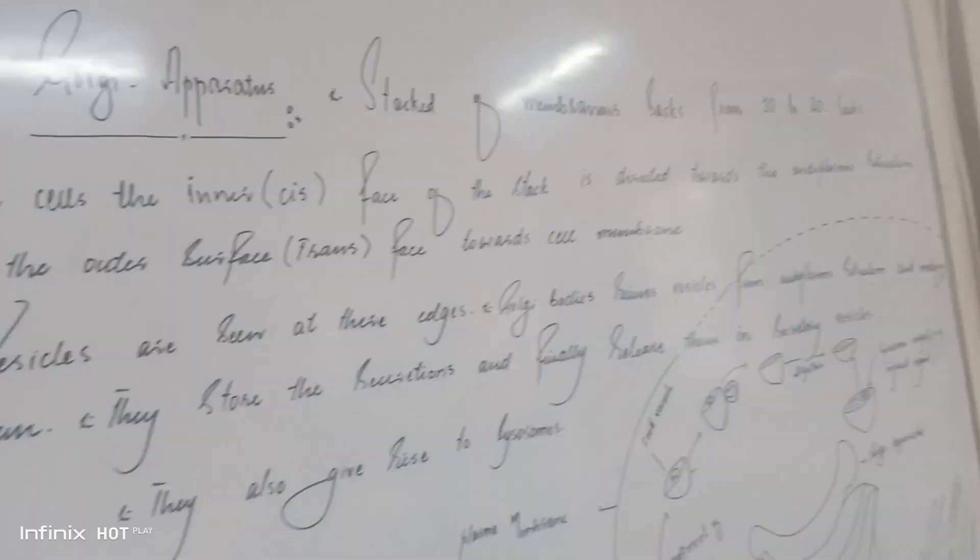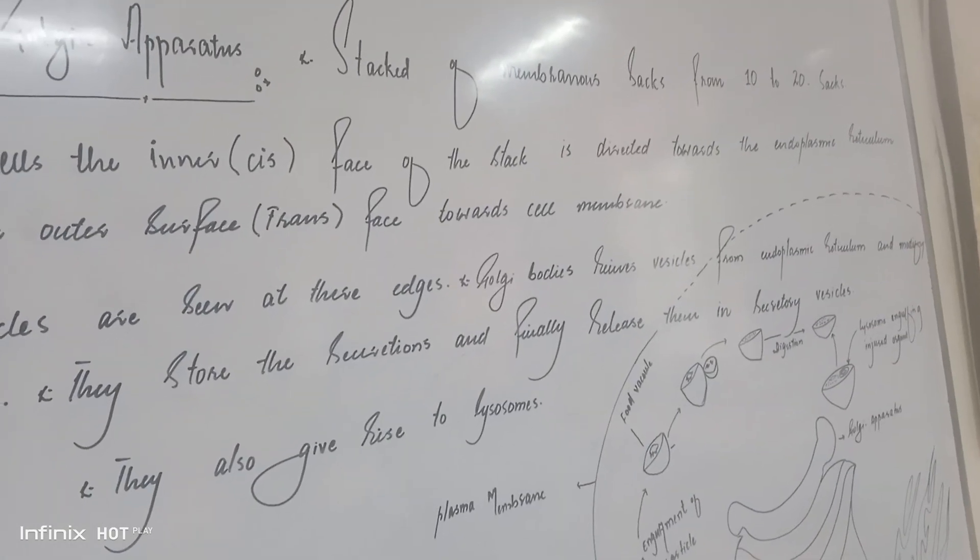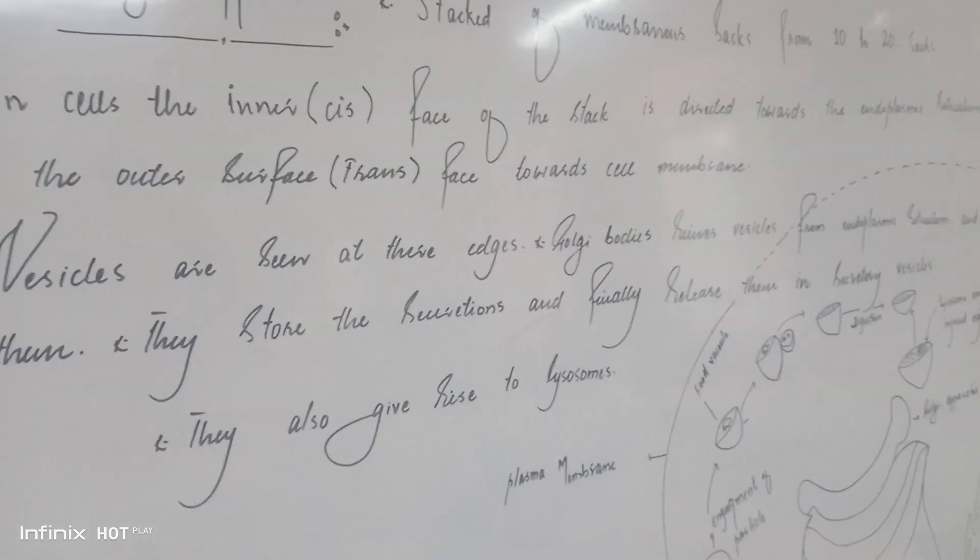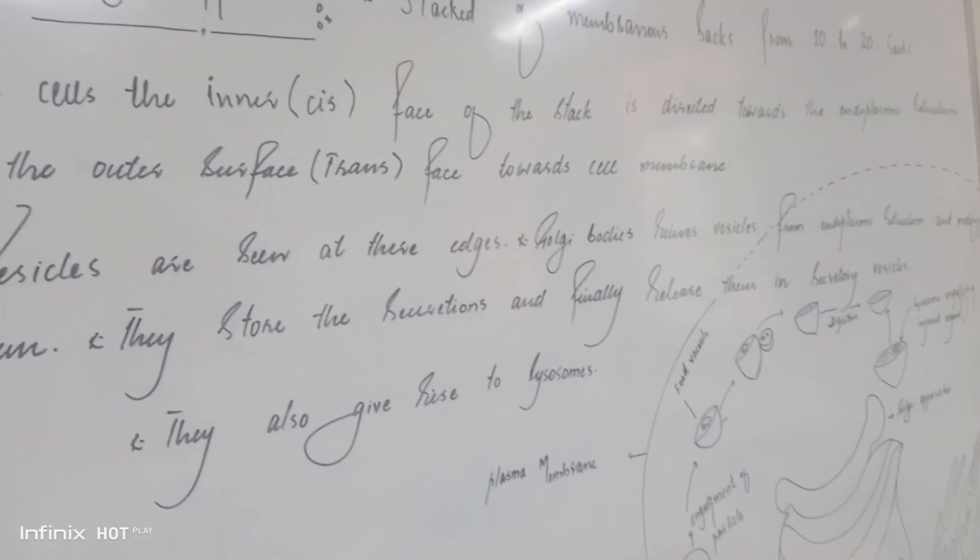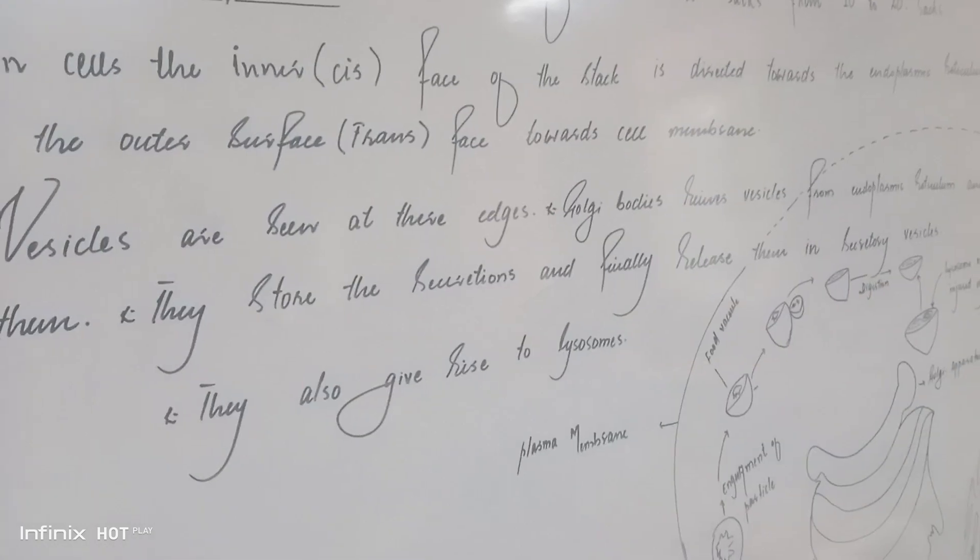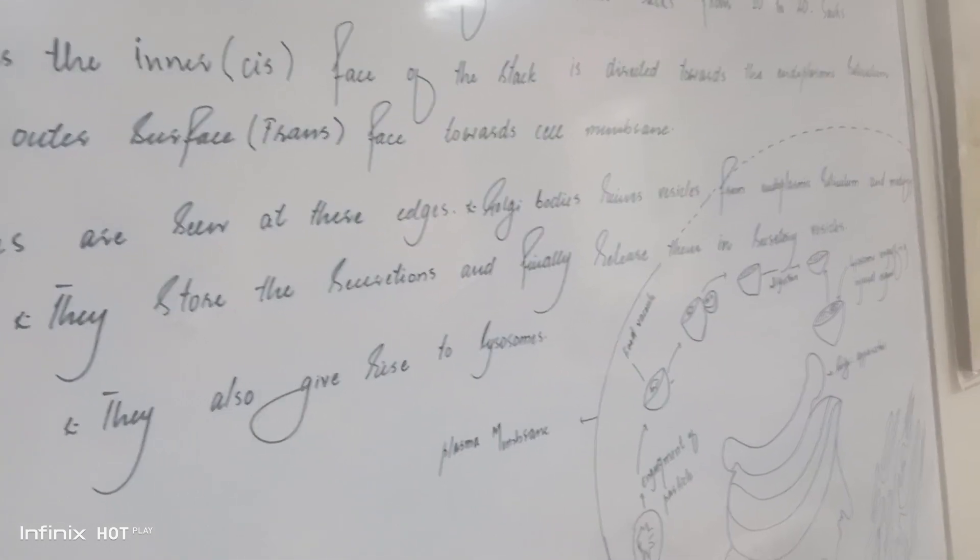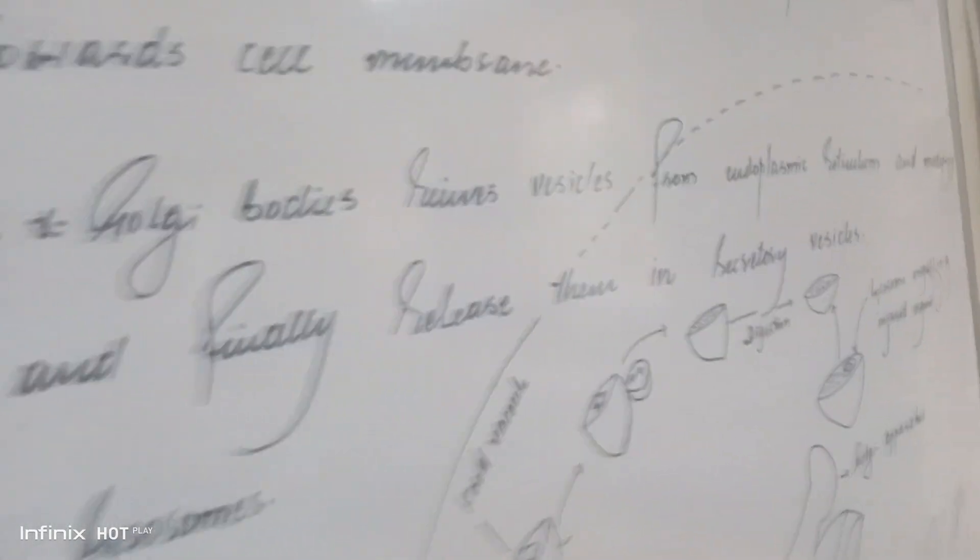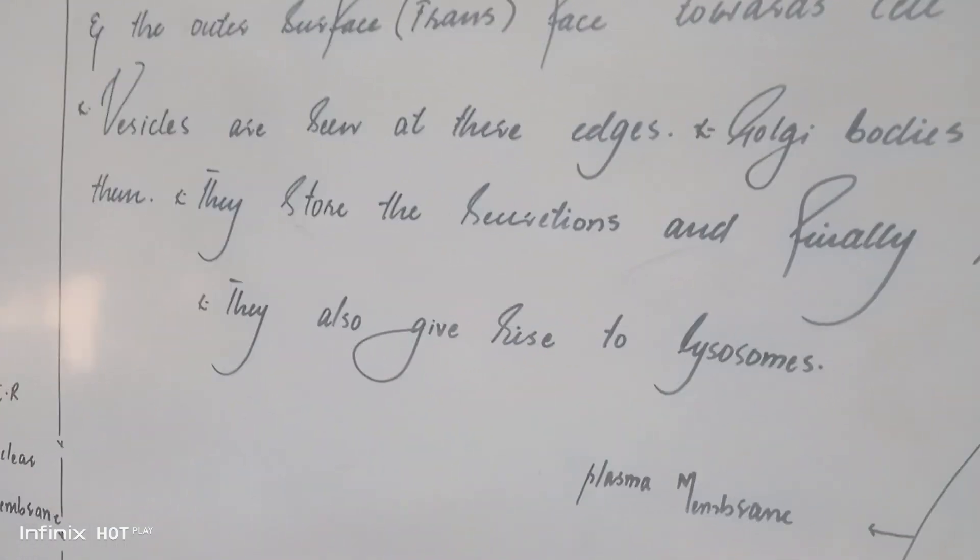The inner surface of the stack is directed towards the endoplasmic reticulum and the outer surface transfers towards the cell membrane. Vesicles are seen at these edges. Golgi bodies receive vesicles from the endoplasmic reticulum and modify them.